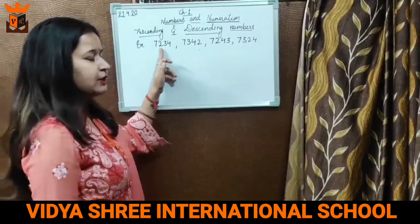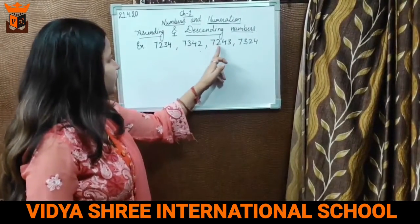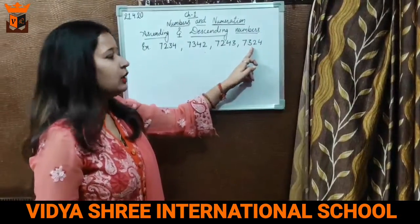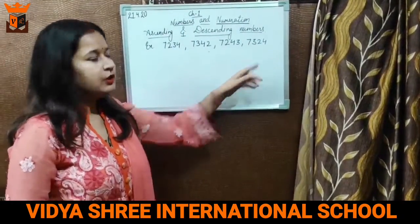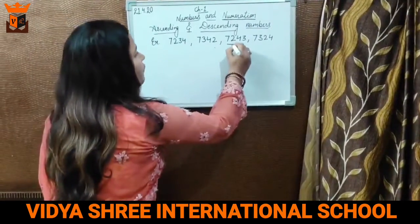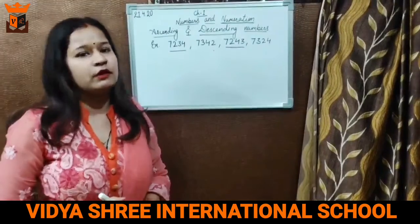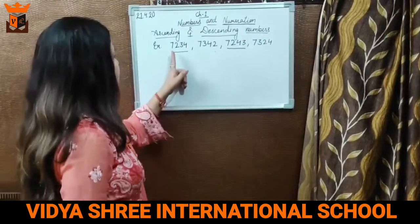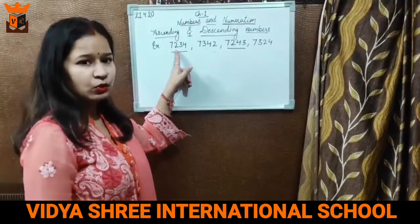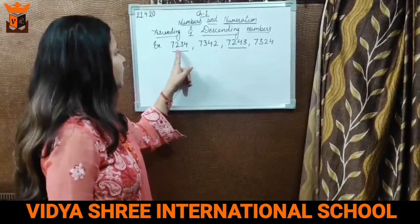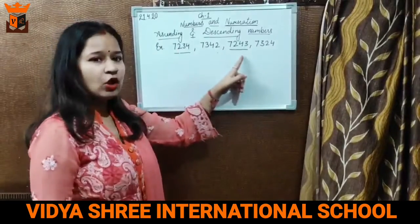Now come to the hundredth place. Here on the hundredth place, there is 2, there is 3, there is 2, there is 3. We always know that 2 is always smaller than 3. So now we have to compare between the numbers with 2 at the hundredth place. Which one is bigger and which one is smaller? Since both numbers have 2 at the hundredth place, we can't compare them according to hundredth place.